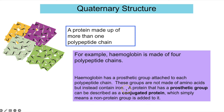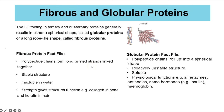Fibrous proteins fold to create long twisted strands, producing a stable, insoluble structure that provides structural strength — for example, collagen in bones and keratin in hair. Globular proteins fold into sphere-like shapes; they are relatively unstable, soluble, and involved in physiological functions such as enzymes, antibodies, some hormones, and haemoglobin. Because they're relatively unstable, globular proteins are all very temperature and pH sensitive.